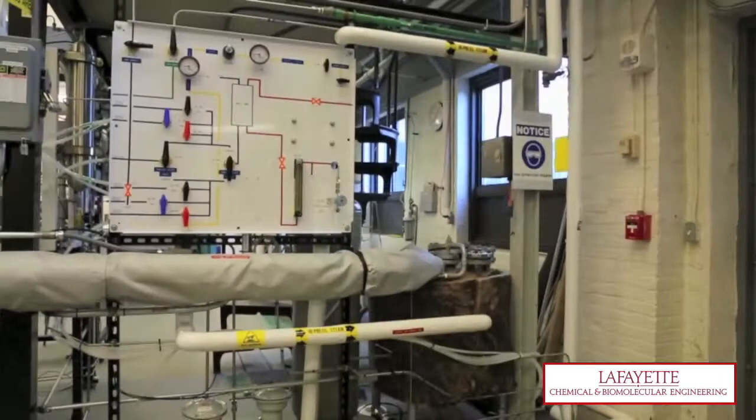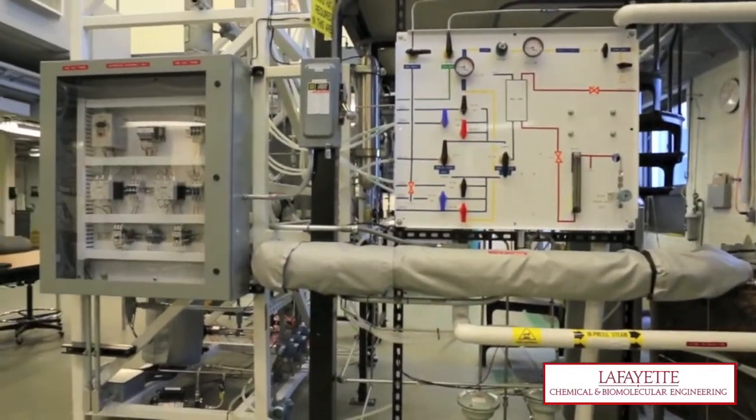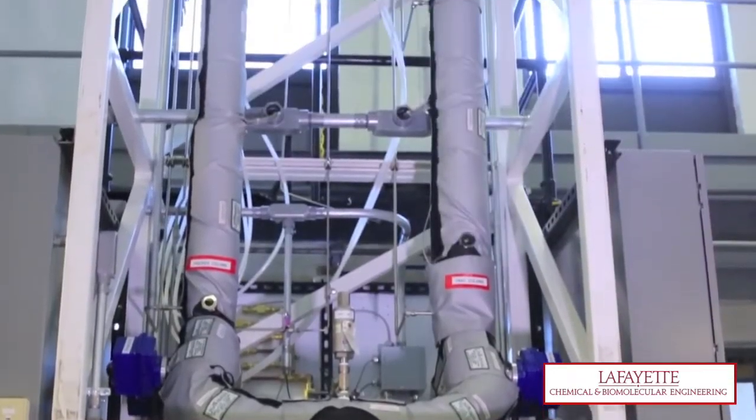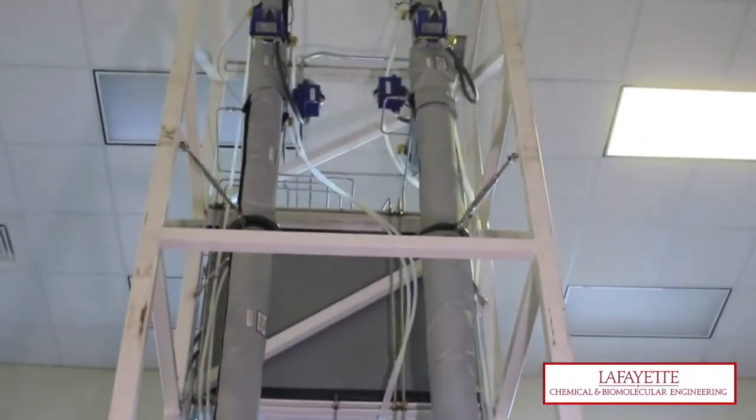The distillation plant in the unit operations laboratory can be used to achieve up to 99% separation by volume of methanol-water or ethanol-water mixtures. The plant is equipped with two columns: one packed column and one tray column.